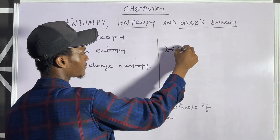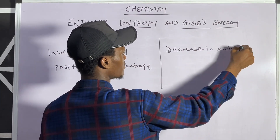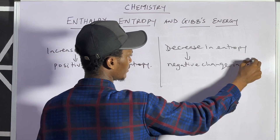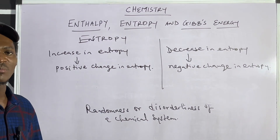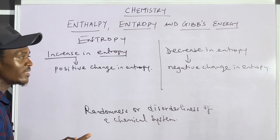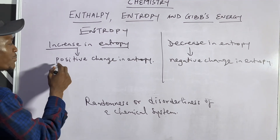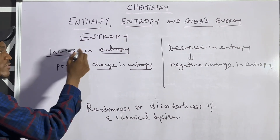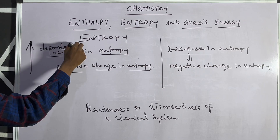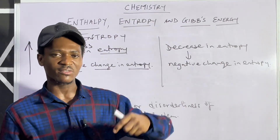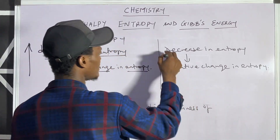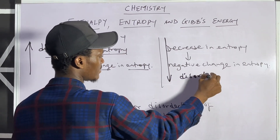When there is a decrease in entropy, it suggests a negative change in entropy. Remember that entropy is the measure of randomness or disorderliness of the chemical system. So when there is an increase in entropy, there is an increase in disorderliness or randomness — a high level of disorderliness. But when there is a decrease in entropy, meaning a decrease in disorderliness, it suggests an increase in orderliness.